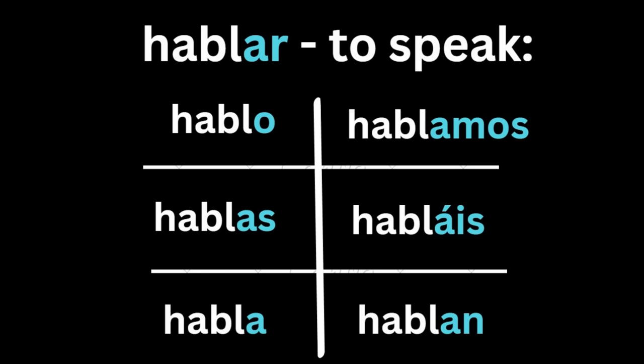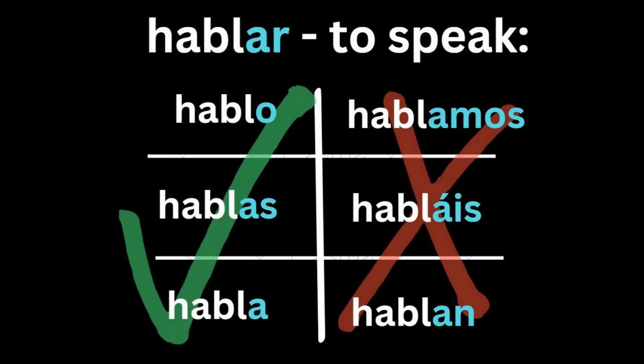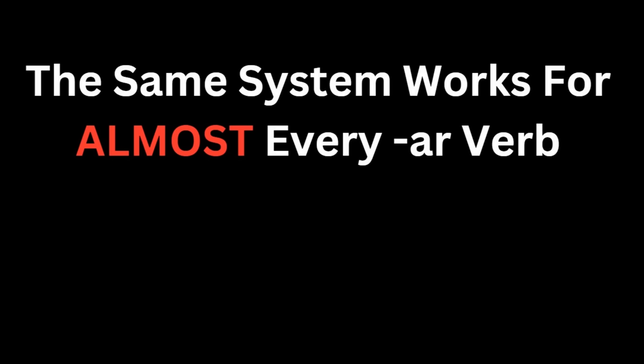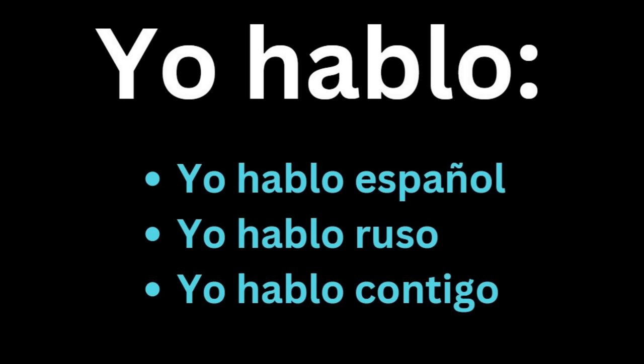The more you try this concept, the faster you'll get it. This same system works for almost every ar verb. By knowing yo hablo, you can already say many sentences — like 'yo hablo español,' 'yo hablo ruso,' or 'yo hablo contigo.' You don't need to make a thousand sentences; focus on the main pronouns and generate examples on your own by translating new vocabulary you encounter.